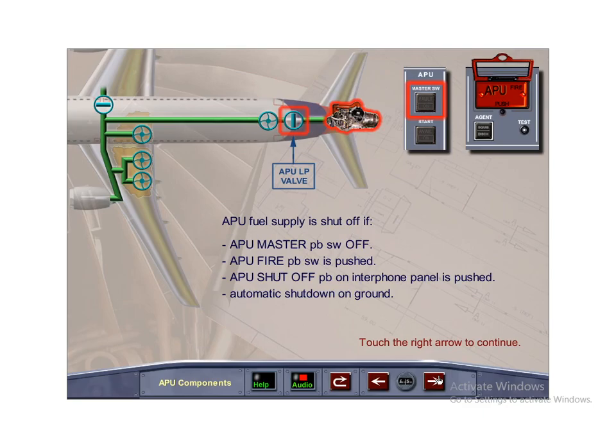The APU fuel supply is shut off if the APU master push-button switch is selected off, the APU fire push-button switch is pushed, the APU shut-off push-button on the interphone panel has been pushed, or there is an automatic shutdown on the ground.